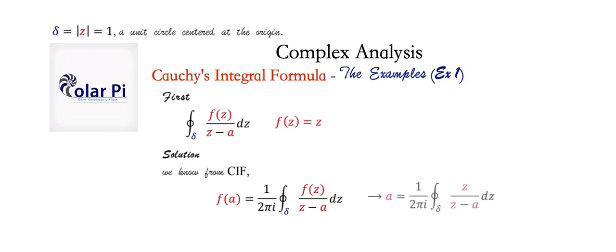first, notice that since we're told that f of z is equal to z, we can replace f of z with z, but also because f of z is equal to z, f of A is equal to A. And now, to solve our integral, our given integral, all we have to do is looking at this equation, then isolate the integral. That amounts to multiplying both sides by 2 pi i, and so doing that, this solves this first integral.